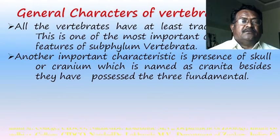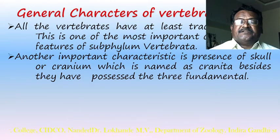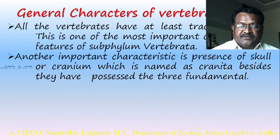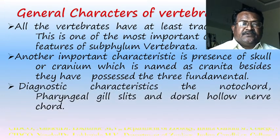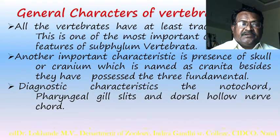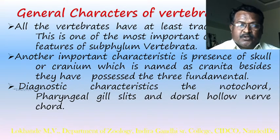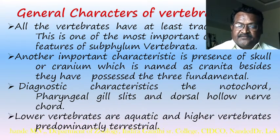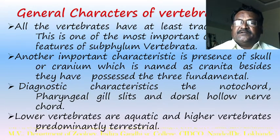Another important characteristic of vertebrates is the presence of a skull, also called the cranium, which is why they are also named Craniata. Besides this, the three diagnostic characteristics of chordates are: presence of a notochord, pharyngeal gill slits, and a dorsal hollow nerve cord.